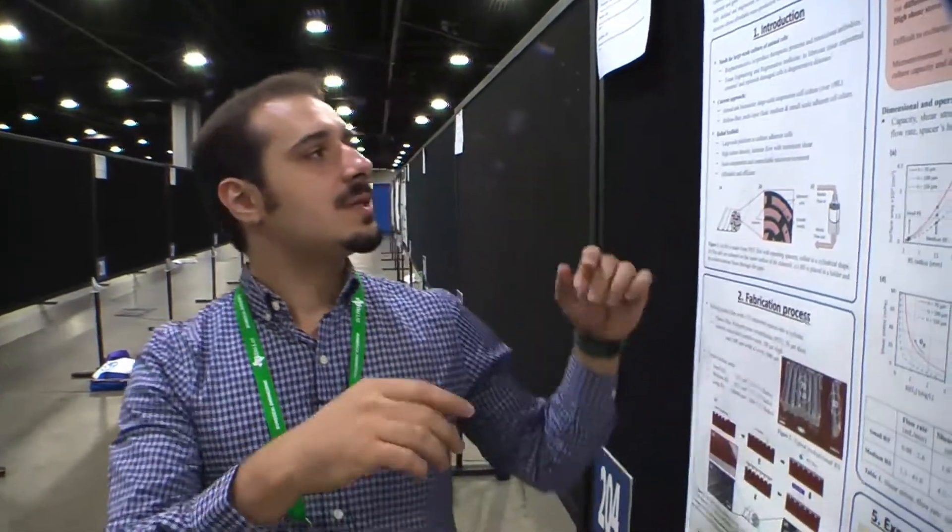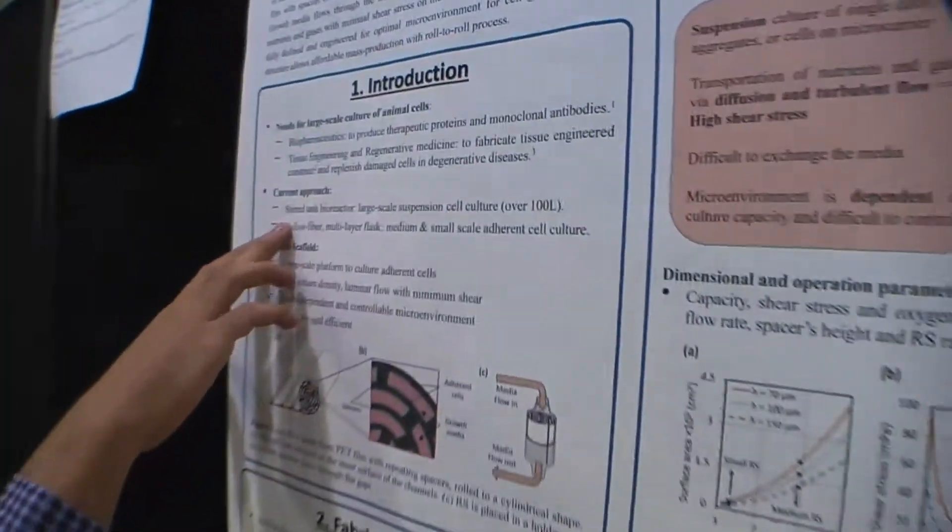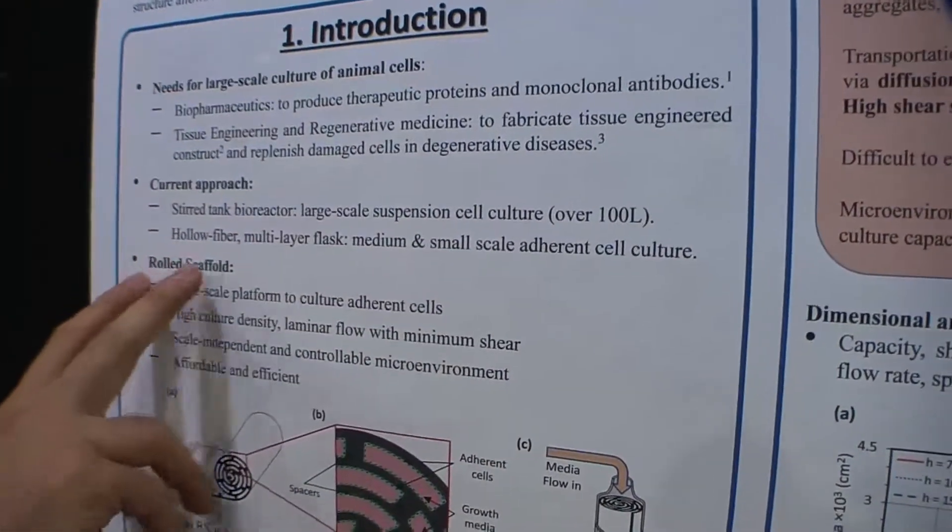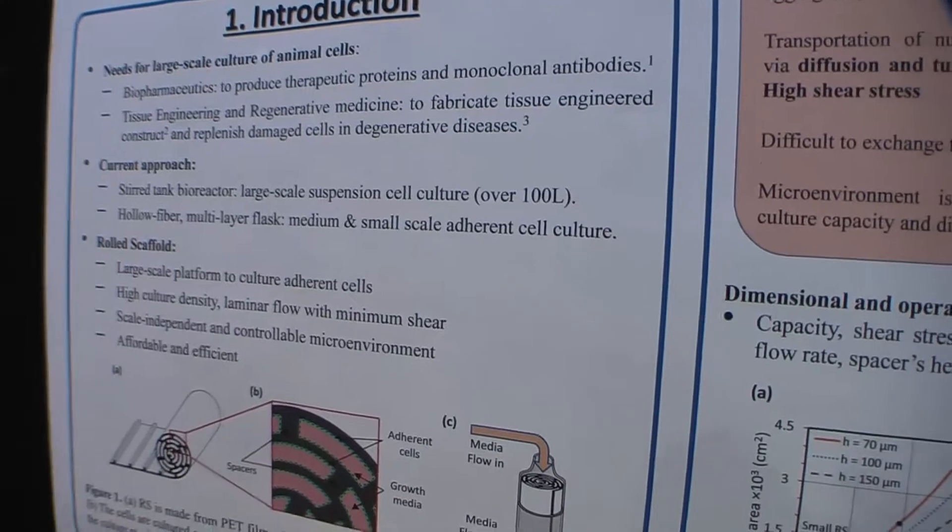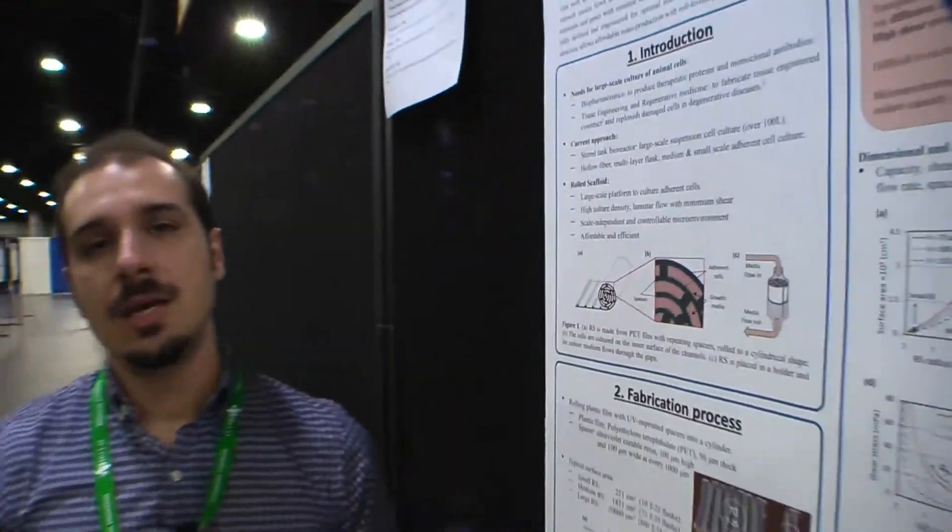In biopharmaceutics and tissue engineering, there is a strong need to culture adherence cells in large quantity, mainly to produce proteins, antibodies, or tissue engineering fabrics. What they normally use is stir tank bioreactors, hollow fiber, and multi-flasks, but they are very limited in their scalability. What I'm proposing today is the Roll the Scaffold.